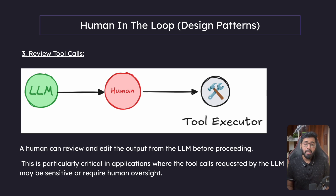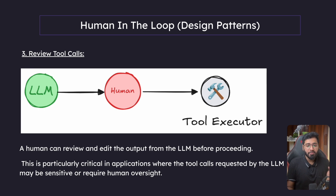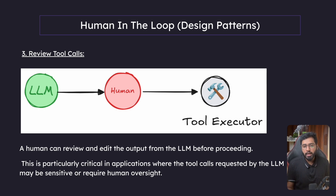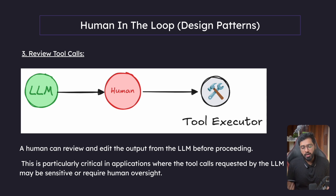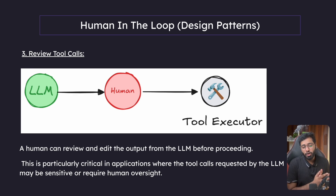You can imagine there could be some tools that are expensive. In that case, we can have the graph ask permission from the human. If the human is okay with it, we go ahead to the particular tool node; otherwise we go to another node in the graph. So the first design pattern — approve or reject — is probably the easiest for a beginner to learn.